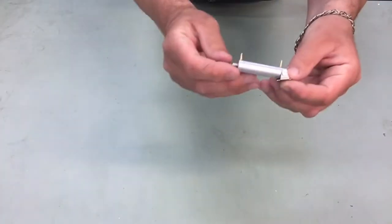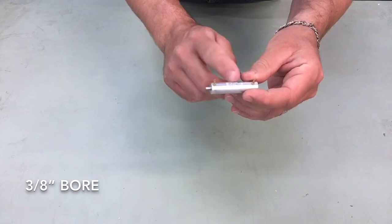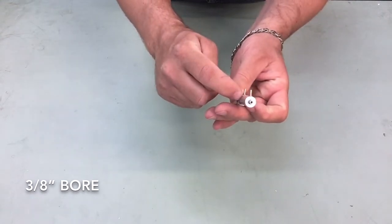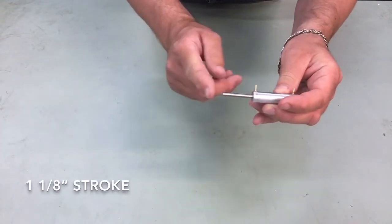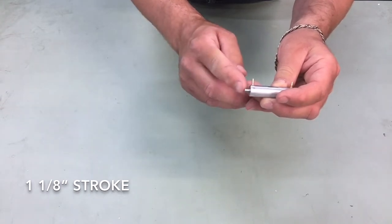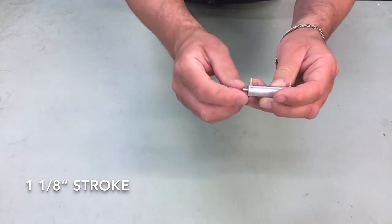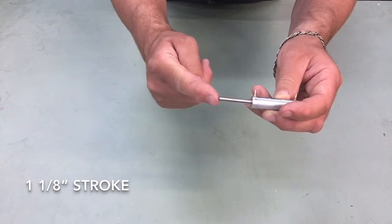The air cylinder itself, this is a 3/8 bore, has a 1-1/8 inch stroke, which is measured from its complete retracted position all the way to the deployed position.